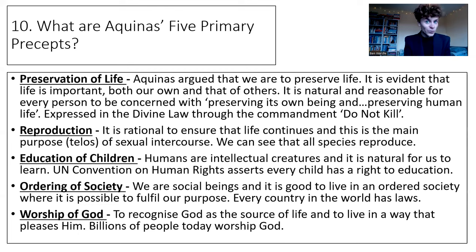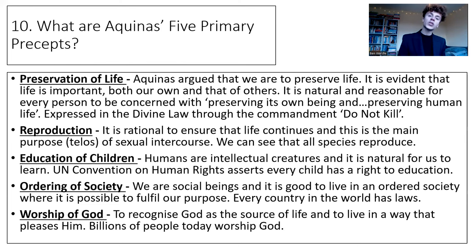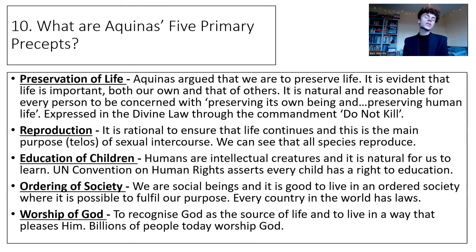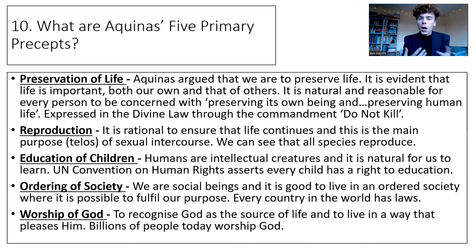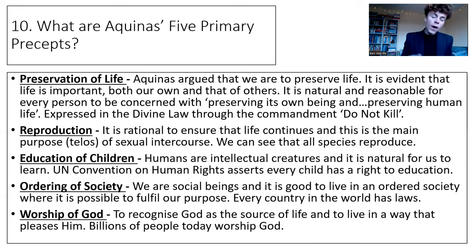The third precept is the education of children — the idea that we all need to be educated, and it is one of the five primary precepts that must be fulfilled. Humans are intellectual creatures; we have that God-given reason that sets us apart from every other animal, so it is natural for us to learn. We see this today in the UN Convention on Human Rights, which asserts that every child has a right to education. The fourth precept is the ordering of society — we need to live in an ordered society with a hierarchy, rules and structure, so that every society has order.